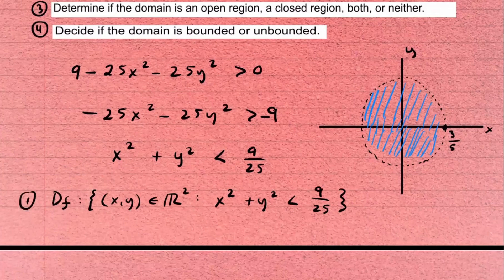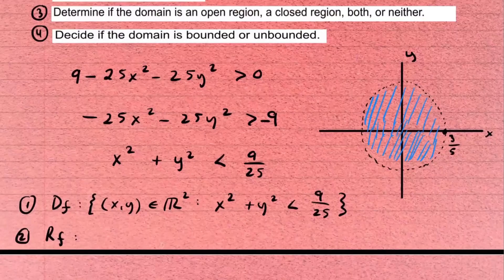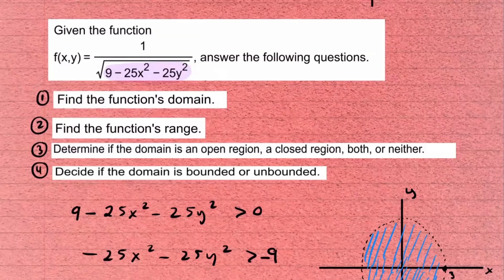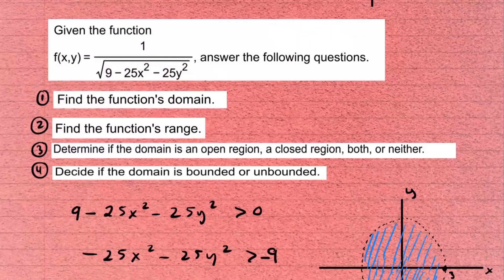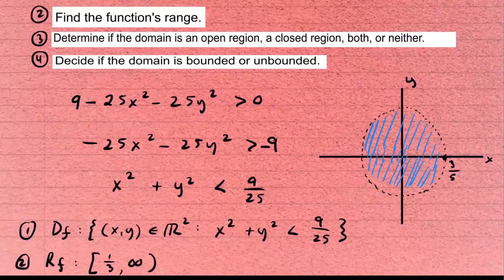Now for the range — we're looking for the possible z-values. The function is smallest when x and y are both zero: plugging in gives 1/√9 = 1/3. As we plug in other domain points the denominator shrinks toward zero, making z grow without bound. So the range is [1/3, ∞).